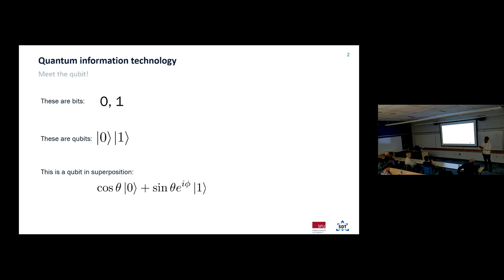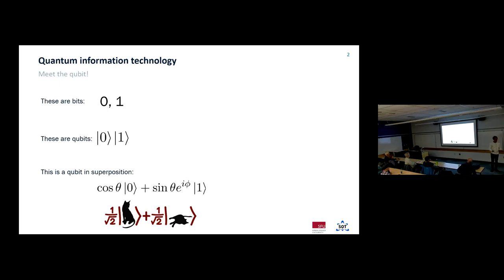A quantum computer takes that concept and extends it into the realm of quantum physics. In quantum physical systems, you don't have to be exclusively in one state or another — you can be in what we call a superposition of both. A quantum bit doesn't have to be just on or off, one or zero. It can exist in a state which is both at once; we call that a qubit superposition. These little angle brackets in the math just indicate a quantum state.